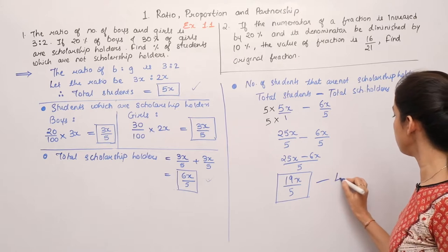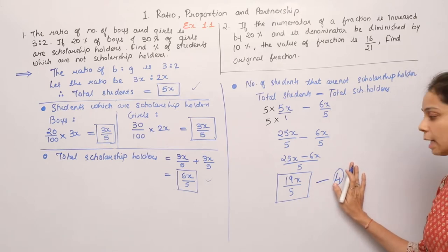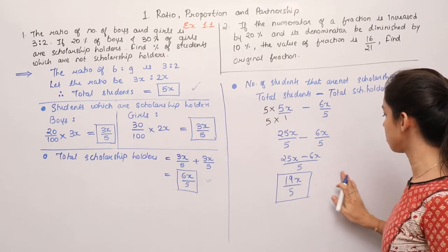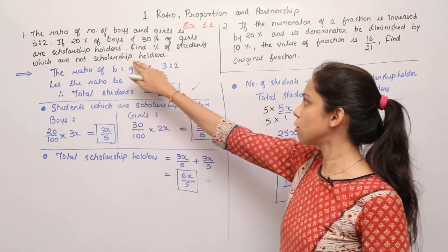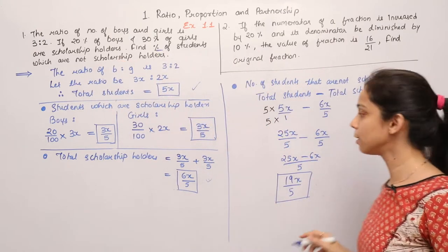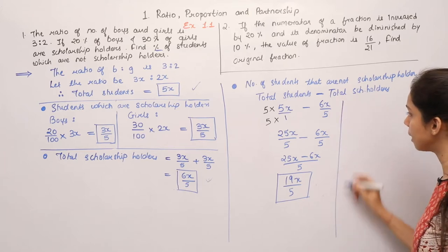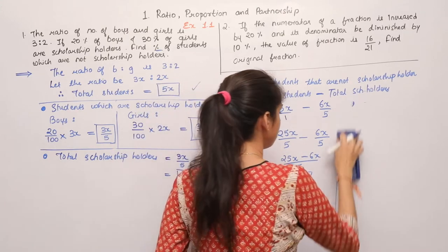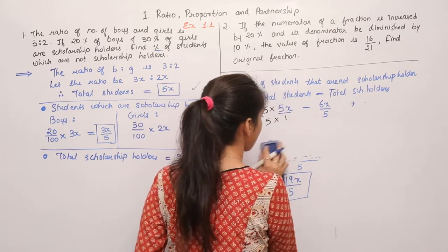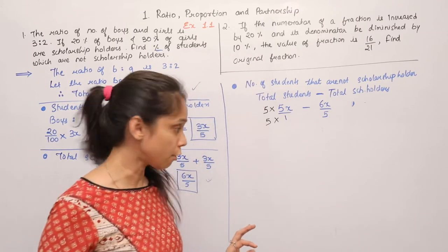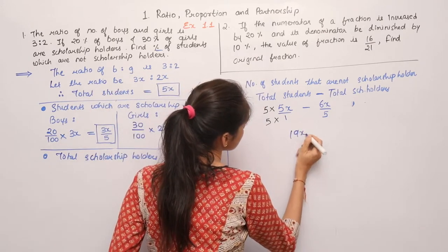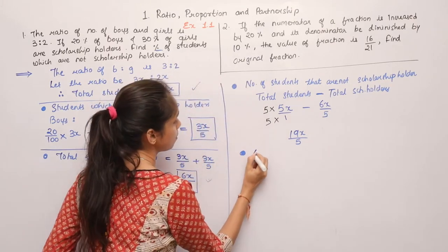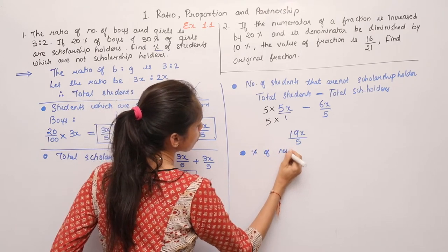This is our total non-scholarship holders, which is 19x upon 5 — equation 4. Don't forget to box this answer. Now we have the count of non-scholarship holders, but we need to find the percentage.